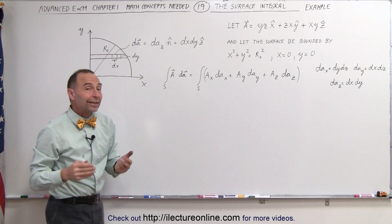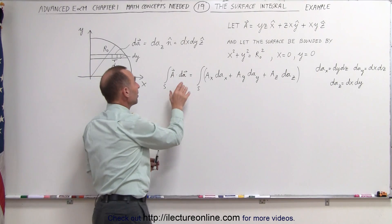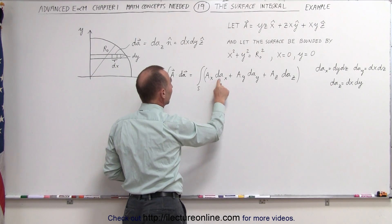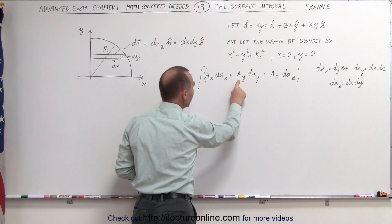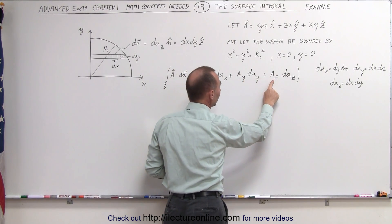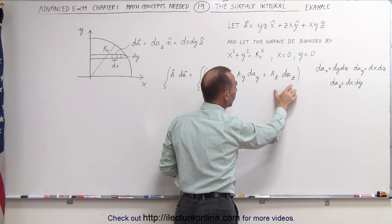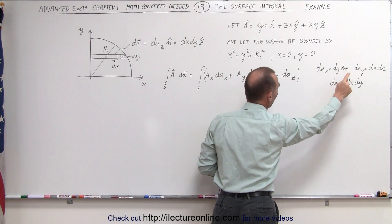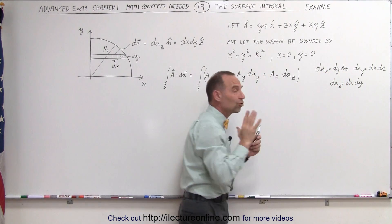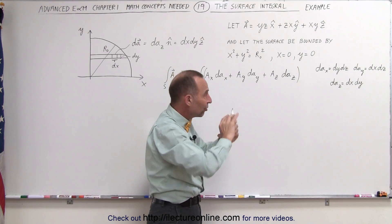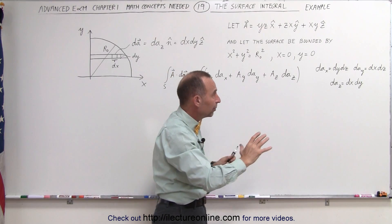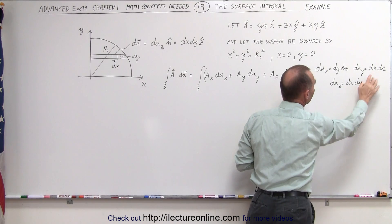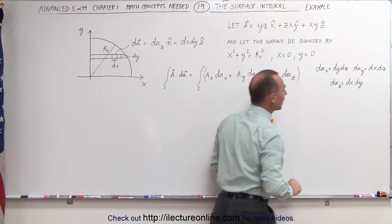We can also write that in rectangular coordinates, which means this can now be written as the x component of the vector field times dA-sub-x, the y component times dA-sub-y, and the z component times dA-sub-z. Notice the definitions here: dA-sub-x, dA-sub-y, and dA-sub-z are projections of the area element onto the yz plane, onto the xz plane, and onto the xy plane respectively.